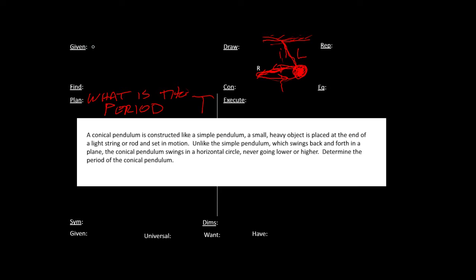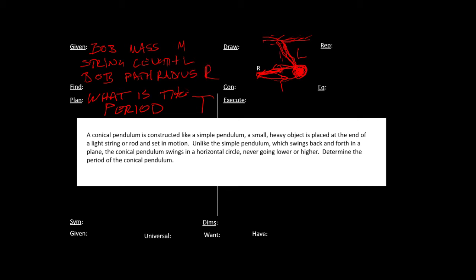So what do we know about this? Well, we know we have a pendulum. It has a pendulum bob with some mass M, has a string with a length L. And then the bob has a path with a path radius R. Those are the physical things we know about this system. We want to find the amount of time it takes to go around in the circle once — that's the period — and we know a few things about the object.